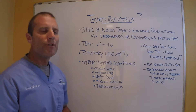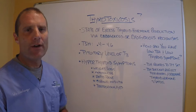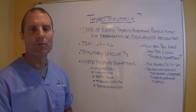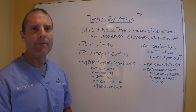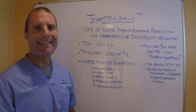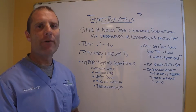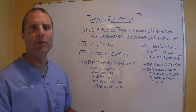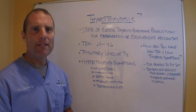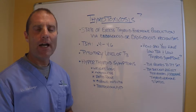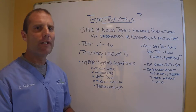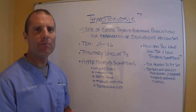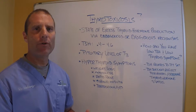Thyrotoxicosis is an excessive production of thyroid hormone, and that can occur for two primary reasons. One, the body is producing excessive amounts of thyroid hormone. The primary cause of that is an autoimmune condition called Graves' disease, or hyperthyroidism, where the gland has just lost its regulation and there's an excessive production of thyroid hormone.